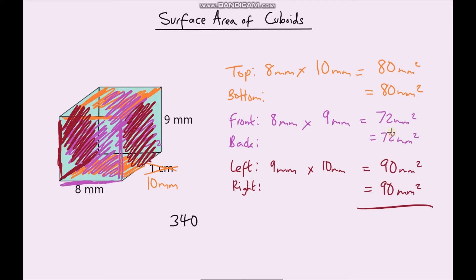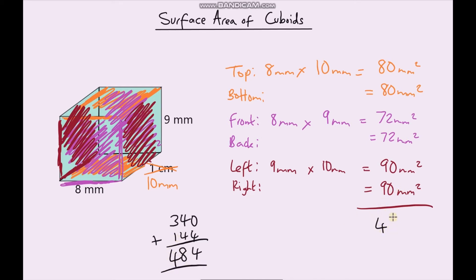72 plus 72 is 144. So we just need to add 340 to 144. 0 plus 4 is 4, 4 plus 4 is 8, and 3 plus 1 is 4. So that's 484 millimetres squared, and that is our total surface area.